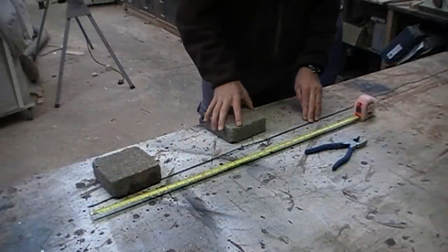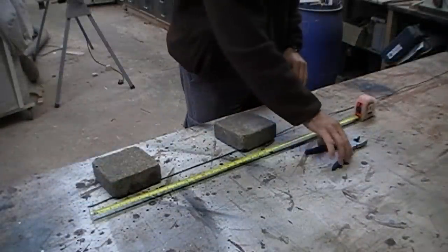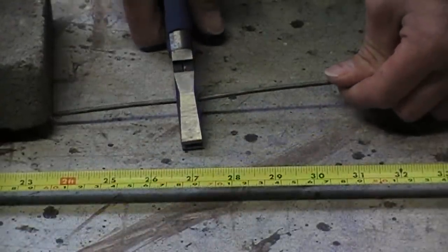So the first step is to cut your piece of wire about 27 inches or 69 centimeters. I'm using a couple of bricks here to weigh the wire down and keep it still while I cut it.